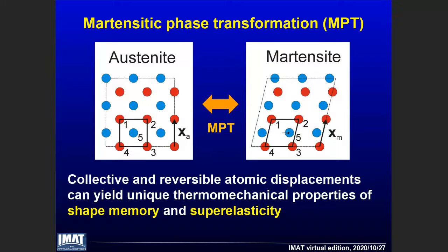What is a martensitic phase transformation in a nutshell? This specific type of transformation is based on collective and, as we will learn today, reversible atomic displacements. In nickel titanium, the phase transformation from the austenite to the martensite can be induced by cooling or straining. Typically, large transformation strain can arise in so-called variants or strain domains. The local arrangement of the strain domains can be rather complex and is coupled to the overall macroscopic shape of a sample, giving rise to the unique thermomechanical properties of shape memory and superelasticity.